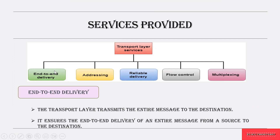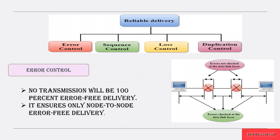End-to-end delivery means that when you are transmitting data from a source to a destination, you must ensure that whatever data is sent from the source reaches the destination — the entire message, without any error or loss, must be received by the receiver. This end-to-end delivery ensures that delivery of an entire message from source to destination is perfectly done in the transport layer.